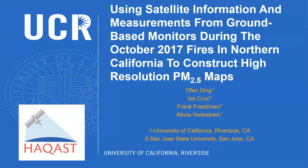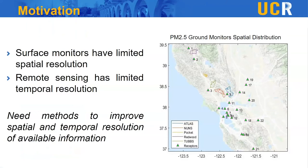I'd like to thank my co-authors Yifang Deng, Issa Cruz, and Frank Friedman — Frank is from San Jose State, and Yifang and Issa are from UC Riverside. The motivation: surface monitors have limited spatial resolution, and remote sensing has both limited spatial and temporal resolution — satellites don't give you much more information than perhaps two or three times a day. So we need methods to improve both the spatial and temporal resolution of available information, and I'm going to show how dispersion models can be used to do this.